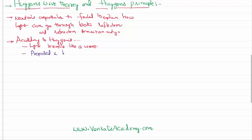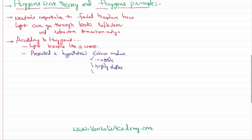Huygens proposed a hypothetical medium called the ether medium. He gave it some special properties: it is invisible, it is highly elastic, very low in density — so you won't be able to feel it — but it is still there. So Huygens proposed this hypothetical ether medium through which light travels like a mechanical wave.